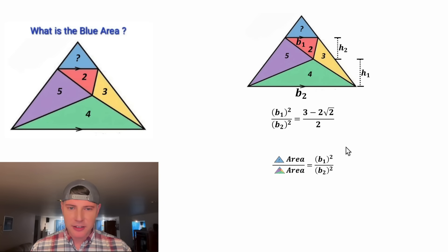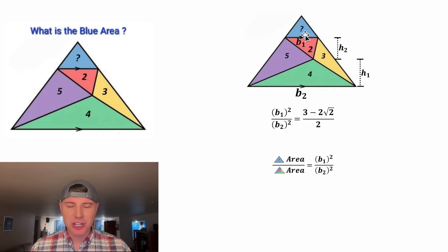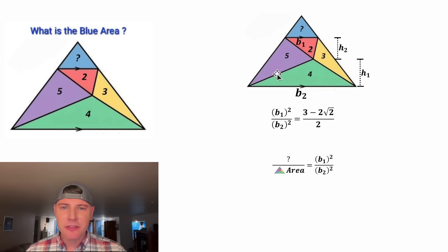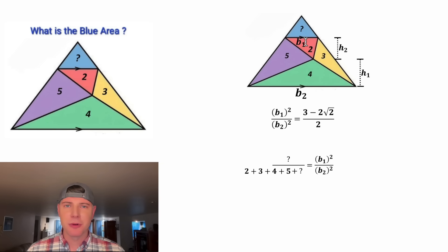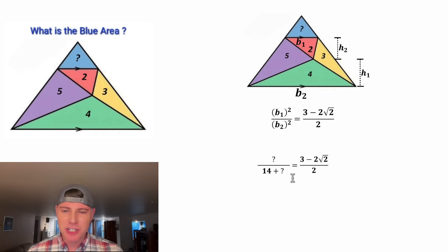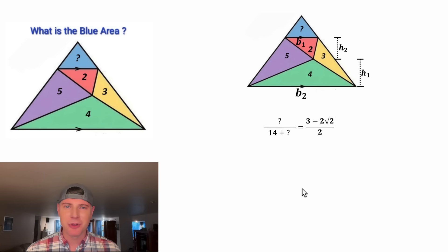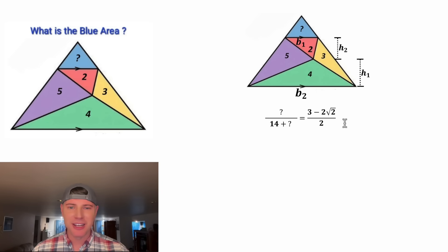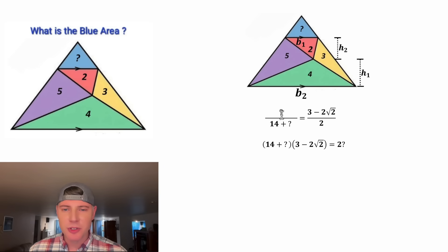Let's focus on the left-hand side. The area of our blue triangle is the question mark, so let's change this to question mark. The area of the larger triangle will be all of these added up plus the question mark: 2 plus 3 plus 4 plus 5 is equal to 14. So the left-hand side is question mark over 14 plus question mark. On the right-hand side, we substitute what we found earlier. Now we have one equation in terms of the question mark. Let's cross-multiply: this times this equals this times this.